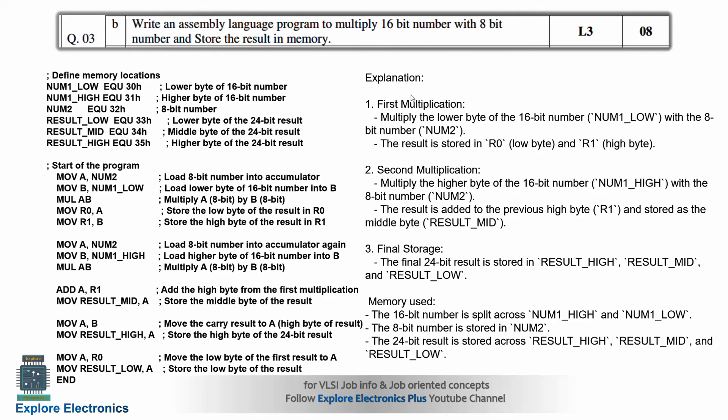The explanation is also given so that you will understand each and every line clearly. While storing it in memory, you are supposed to use RESULT_HIGH, RESULT_MID, RESULT_LOW. Otherwise, if they specify particular registers in place of RESULT_HIGH, MID, and LOW, you can use those registers.